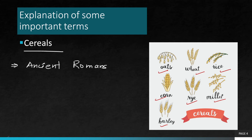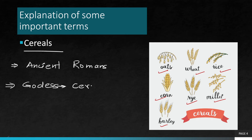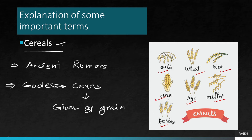It came from the ancient Romans who, long before the Christian era, used to hold a lot of festivals for sowing and harvesting. This was done in honor of the goddess Ceres — the Roman goddess whose name means 'giver of grain.' That is how the name cereals came into effect. In those festivals they used to offer wheat and barley as gifts to their goddess.